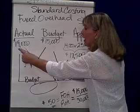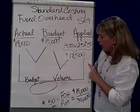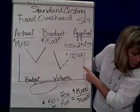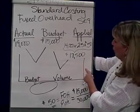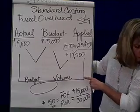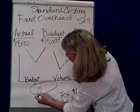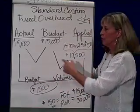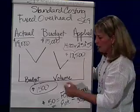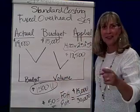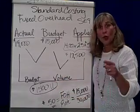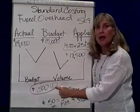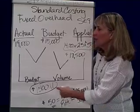The problem also says our actual fixed overhead costs were $19,000, so that's how much we actually spent. Comparing actual with what we applied, we have a difference of $1,500. I spent more than I applied, so it's unfavorable. Unfavorable and under applied both start with 'U' — so under applied, unfavorable, $1,500 variance.